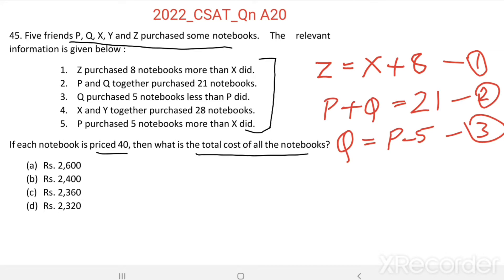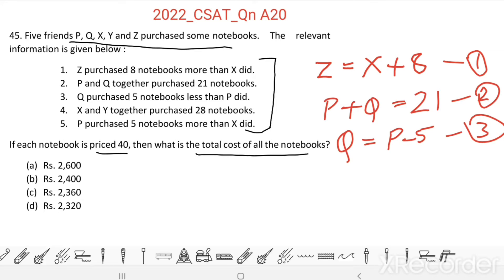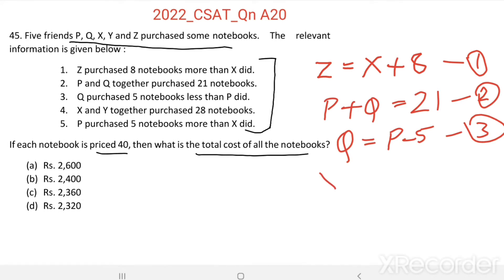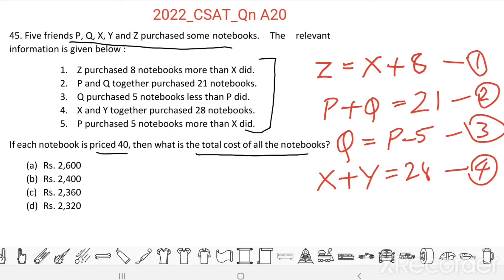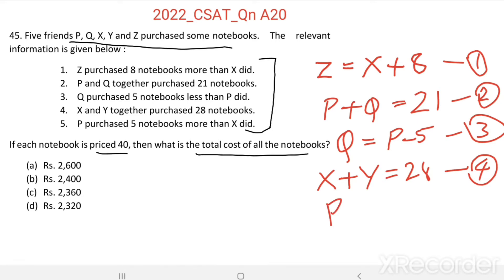From the fourth statement, X and Y together purchased 28 notebooks, so X + Y = 28. This is equation four. From the fifth statement, P purchased 5 notebooks more than X did, so P = X + 5. This is equation five.